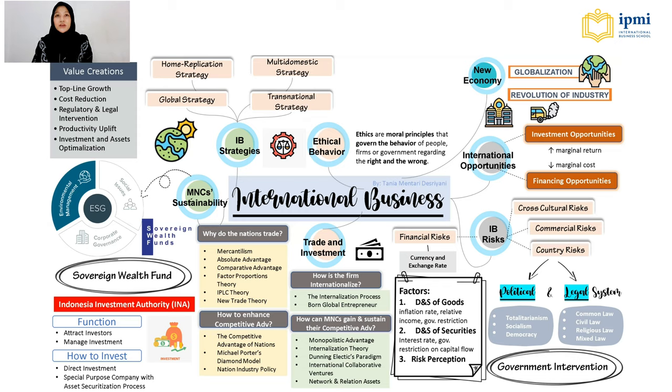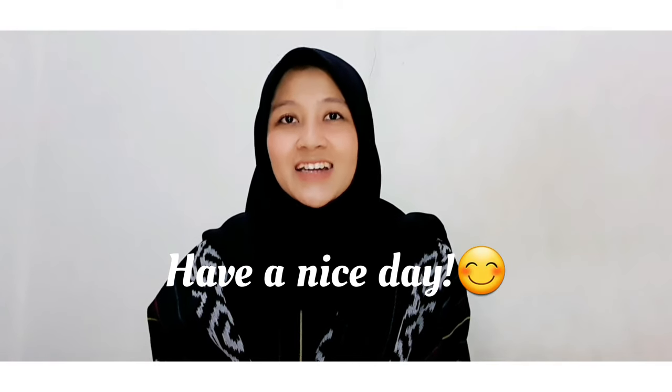The last topic is ethics in international business. Ethics refers to moral principles or values that govern the behavior of people, firms, and governments regarding right and wrong. The most common unethical things in business are corruption, bribery, piracy, and counterfeiting. In conclusion, international business taught me that all countries are interdependent yet competitive at the same time. Countries need to make profit from international business, but it's also important to build a sustainable and healthy business environment so every country can reach prosperity while considering the environmental and social impacts of business activities.